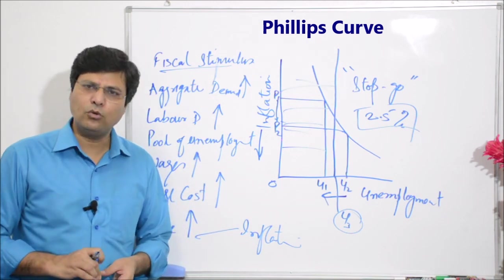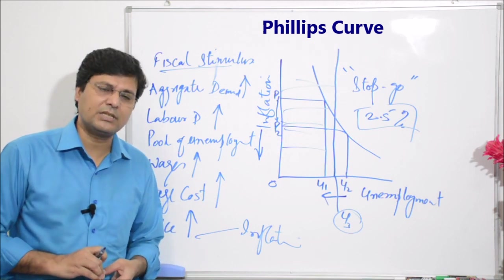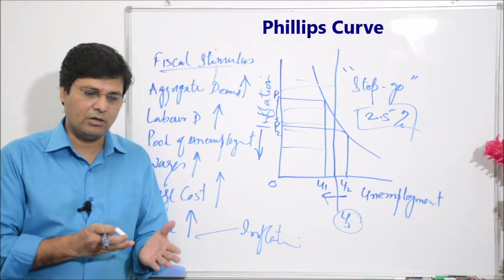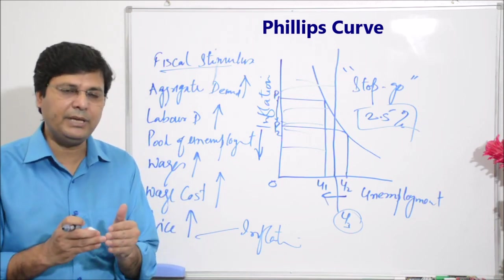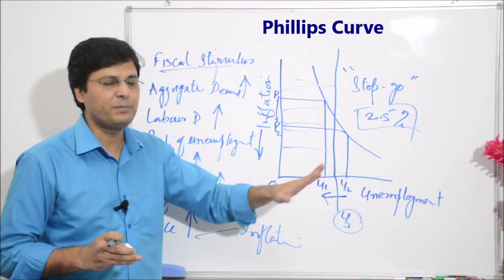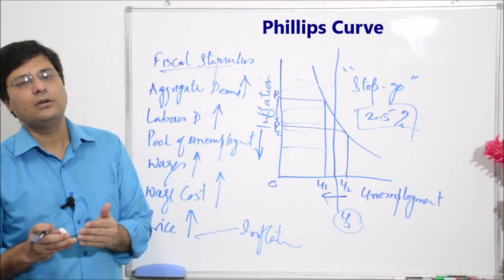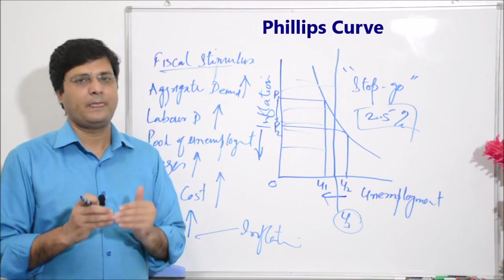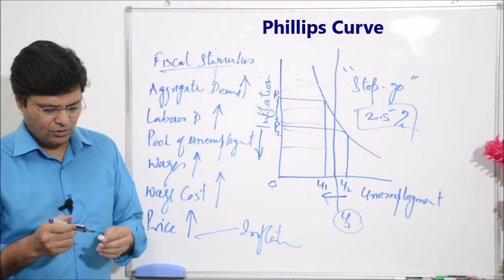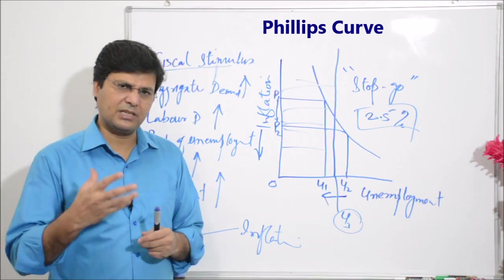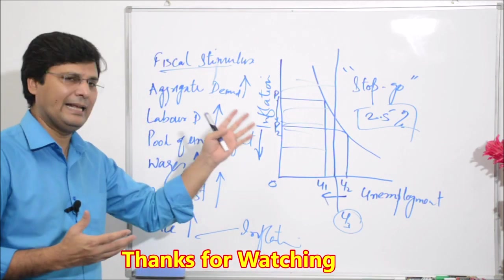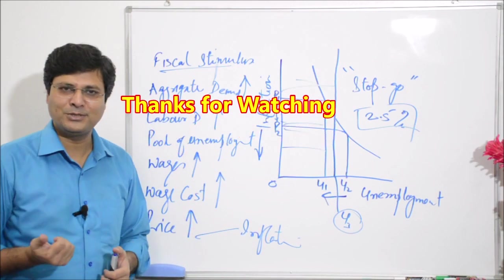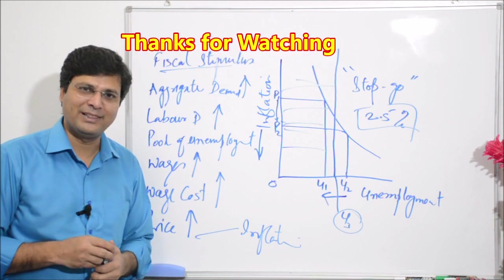Phir bhi baaki log maante hain — kuch economists ka kehna hai ki ab bhi yeh system relevant hai, log is par kaam karte hain, aur government ab bhi kaafi had tak ise base banaakar apni policies banati hai. Policy makers ab bhi Phillips Curve ka use karte hain. Mujhe umeed hai yeh samajh mein aaya hoga. Agar koi problem ho to comment box mein bataiye. Thank you so much.